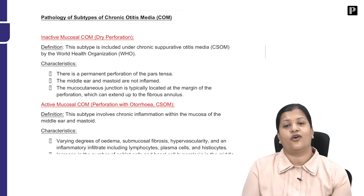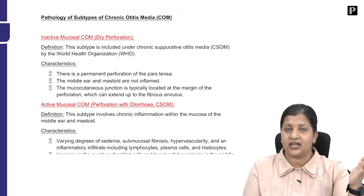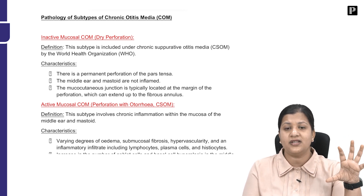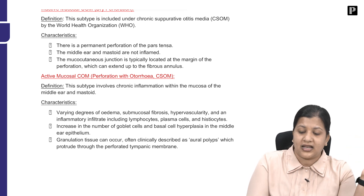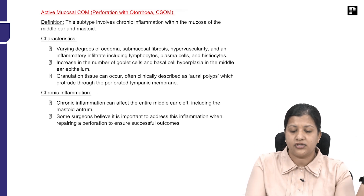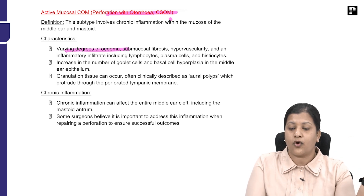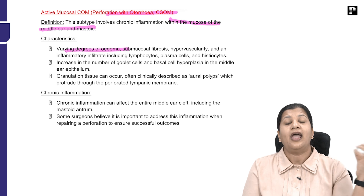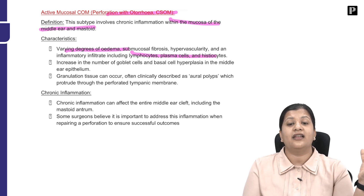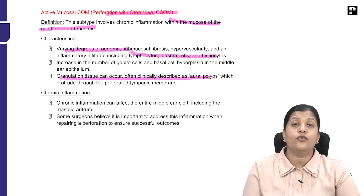Now the pathology of the subtypes. In inactive mucosal disease, there is a permanent perforation but the middle ear and mastoid are not inflamed. In active mucosal disease, there is a perforation with otorrhea — discharge from the middle ear — and varying degrees of edema and inflammation of the middle ear and mastoid mucosa. Because of this inflammation, lymphocytes, plasma cells, and histiocytes accumulate in the middle ear exudate, and granulation tissue can form, potentially resulting in aural polyps that protrude through the tympanic membrane.